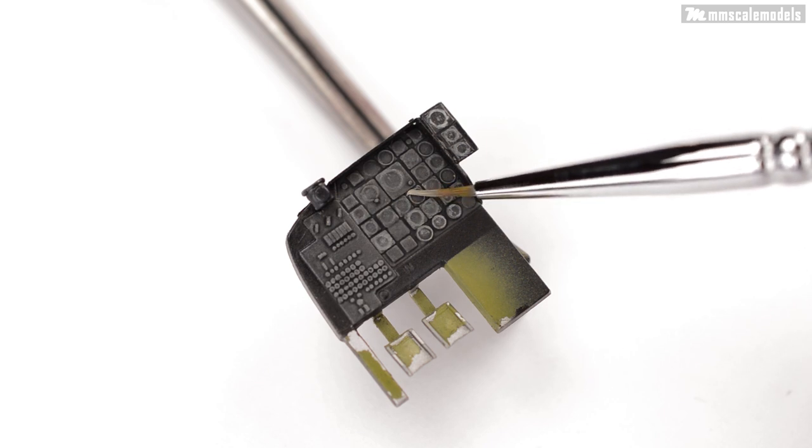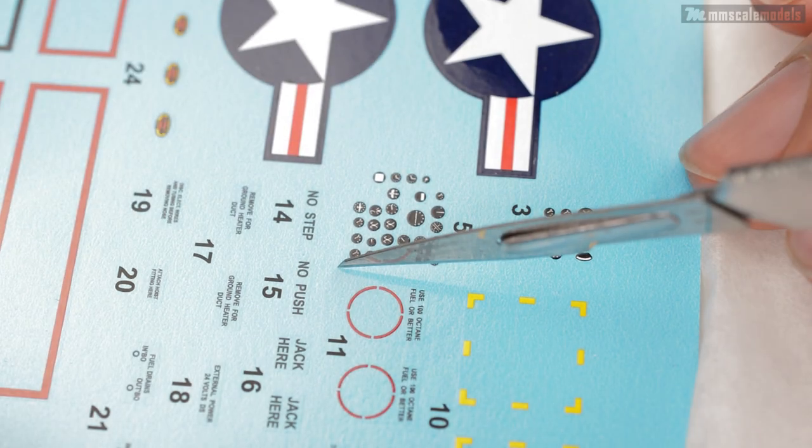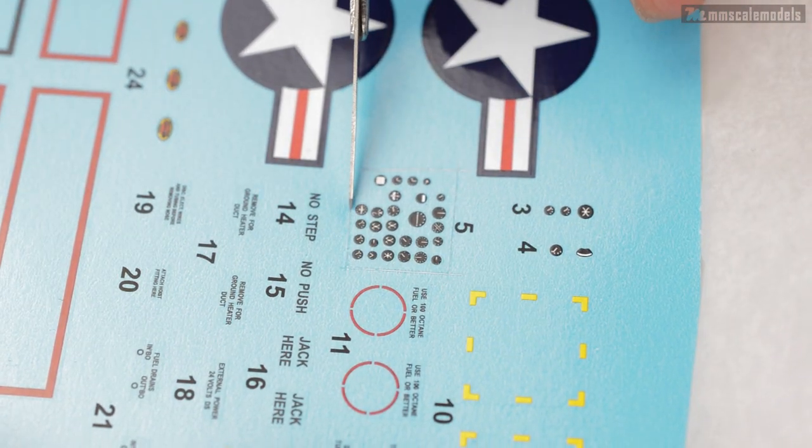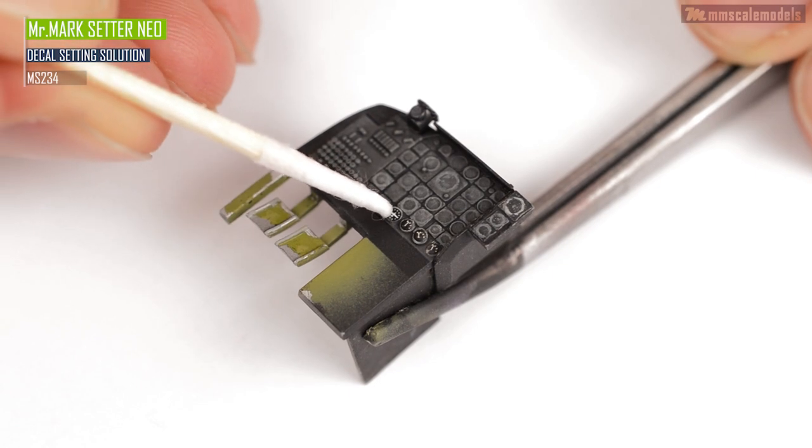Unfortunately not all are as crisp as they could be but it is what it is. The decals that come with this kit are nicely printed and more importantly each instrument face comes as a separate decal. This will save me a ton of work trying to cut out each circle.